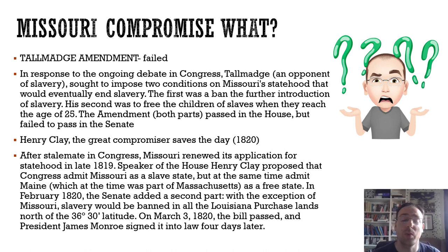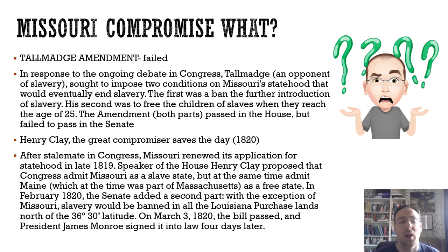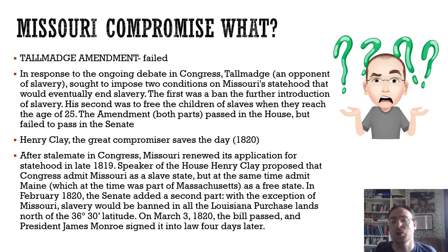So what was the Missouri Compromise? Before the real compromise, there was an attempt known as the Talmadge Amendment. Talmadge, an opponent of slavery, said that if Missouri came in as a slave state, he would put conditions on it: first, to ban the introduction of any further slaves into Missouri; and second, to free the children of slaves once they reached the age of 25. So Missouri could come in as a slave state but ultimately wouldn't be one in the long term. Both parts passed through the House but failed in the Senate.